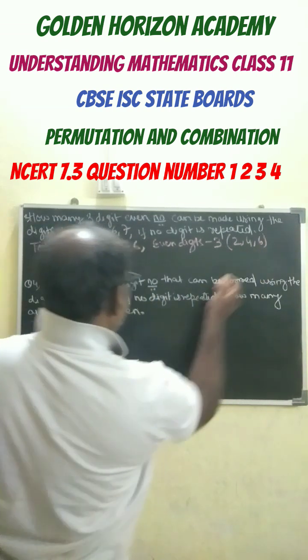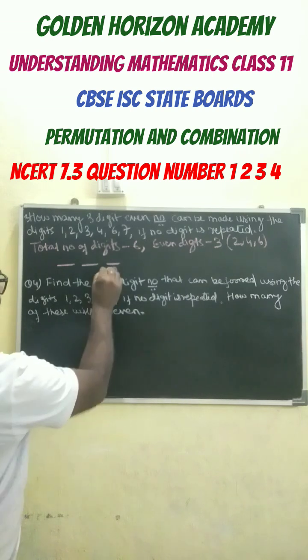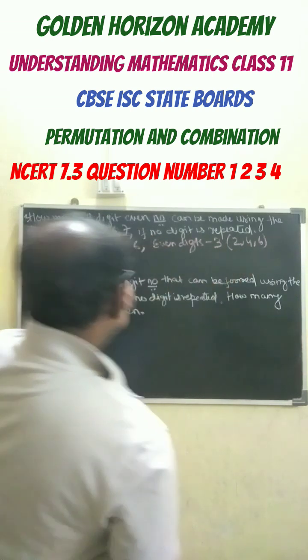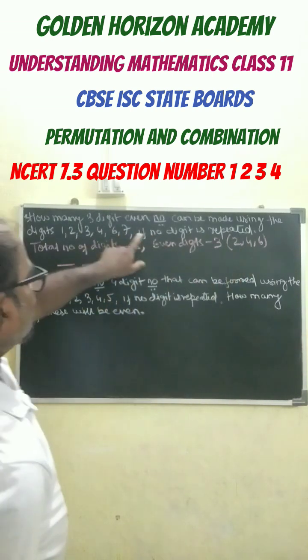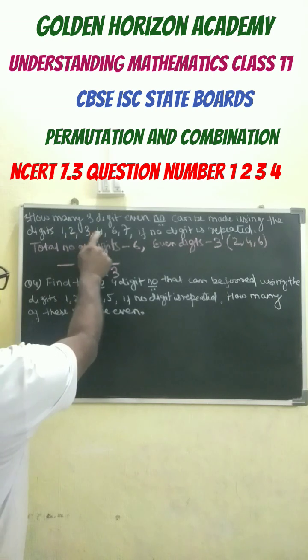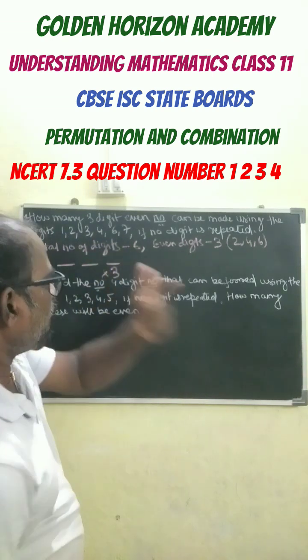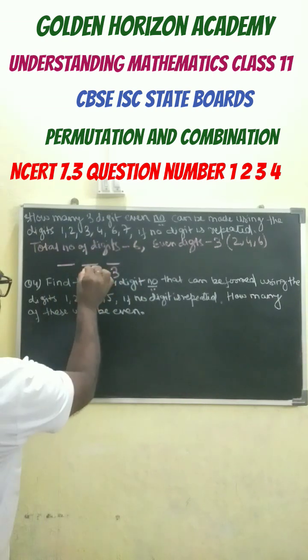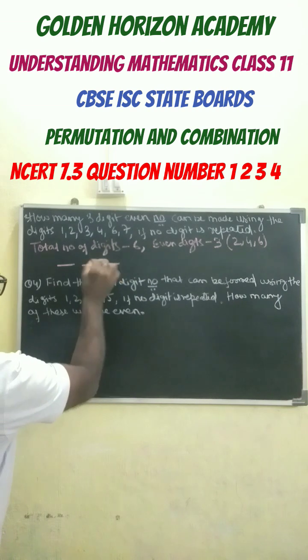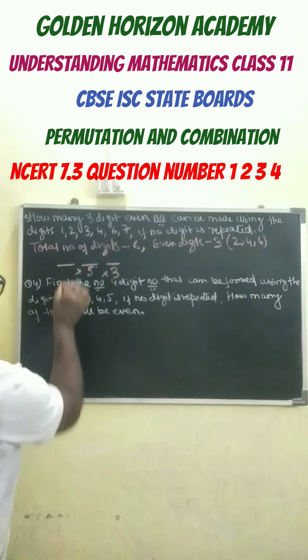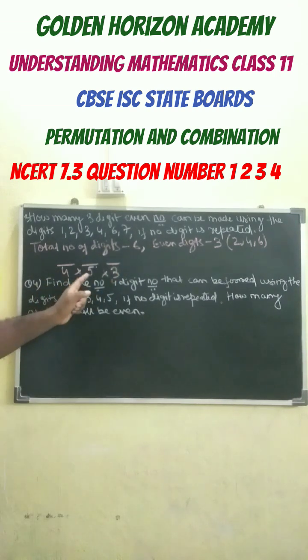After the units place is completed, we have five remaining from one, two, three, four, five, six. So the tens place can be filled in five ways, and the hundreds place can be filled in four ways. So 4 times 5 is 20, times 3 is 60 - our answer is 60 ways.